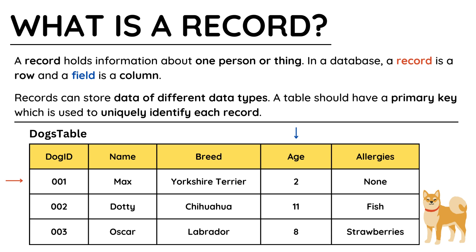Before we use SQL, we need to know what a record is. This is a type of data structure used in databases to hold information about a single item, usually one person or one thing. Each row in the table is a record and each column is a field. A field must be a certain data type, such as name in my table, which is a string, and age, which is an integer, because it is a whole number.